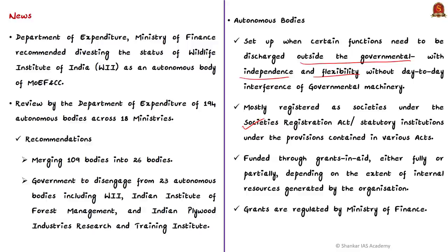Regarding their funding, autonomous bodies are funded through grants-in-aid either fully or partially, depending on the extent to which they generate their own internal resources. These grants are regulated by the Ministry of Finance. The department has recommended merging 109 bodies out of 194 into 26 bodies. It also recommended the government disengage from 23 autonomous bodies, including the Wildlife Institute of India and the Indian Institute of Forest Management.